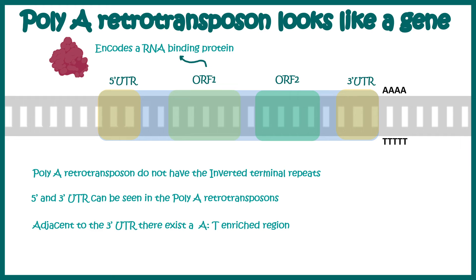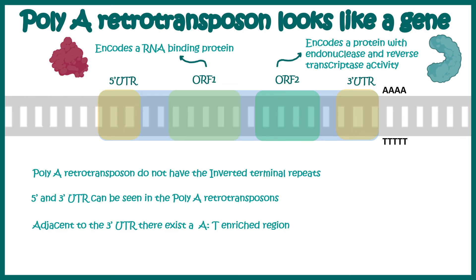The ORF1 encodes for an RNA binding protein, and ORF2 encodes for a protein which has endonuclease and reverse transcriptase activity. Exactly how poly-A retrotransposons work is beyond the scope of this overview video. In a different video, I'll be discussing how these particular retrotransposons work.